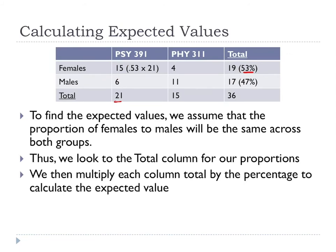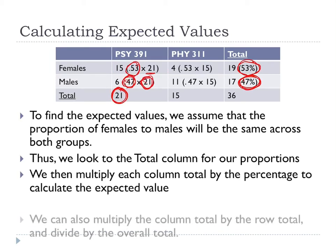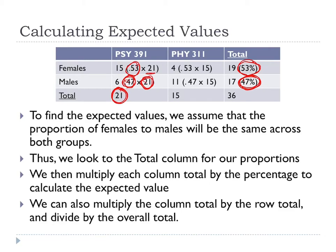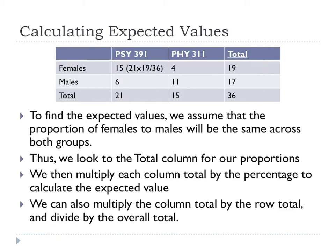To find the expected value for a given cell, another way is: column total times row total divided by overall total. So that's 21 times 19 divided by the overall total. This makes sense because the 53% came from dividing 19 by 36 to begin with, and we're multiplying the class total by that same percentage. So both methods are equivalent — column total times row total divided by overall total.